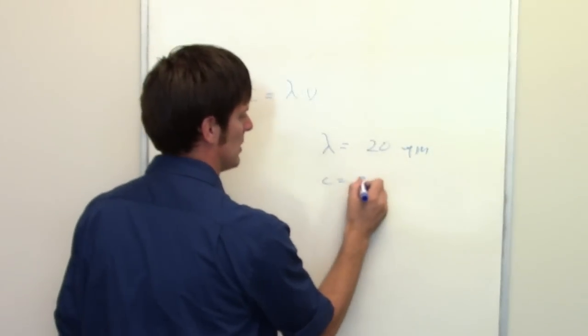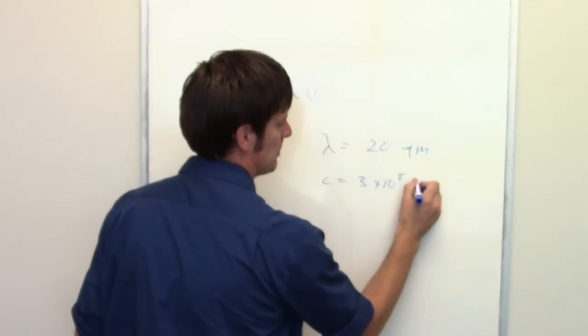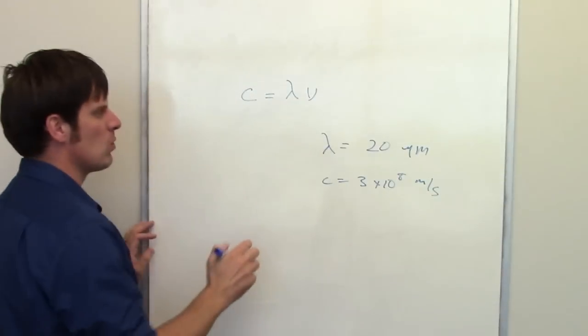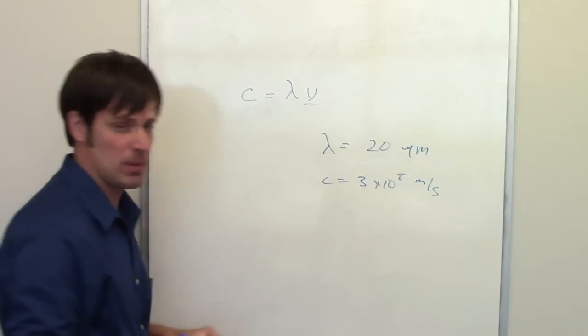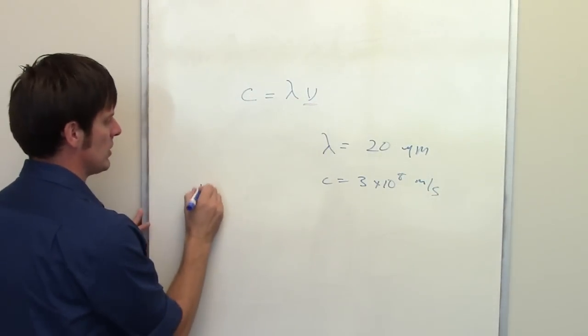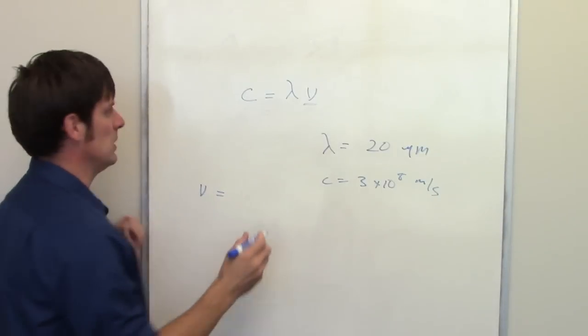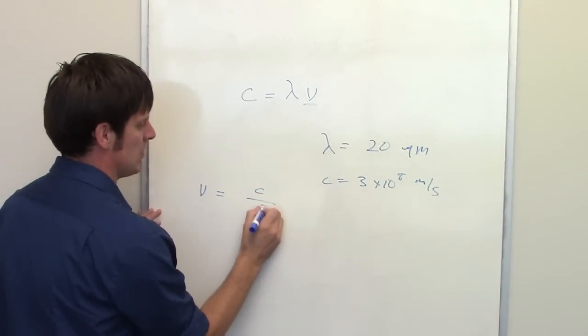Now, we know the speed of light to be equal to 3 times 10 to the eighth meters per second. What is our frequency, the unknown variable we're trying to determine? Well, using algebra, it's going to be equal to the speed of light divided by the wavelength.